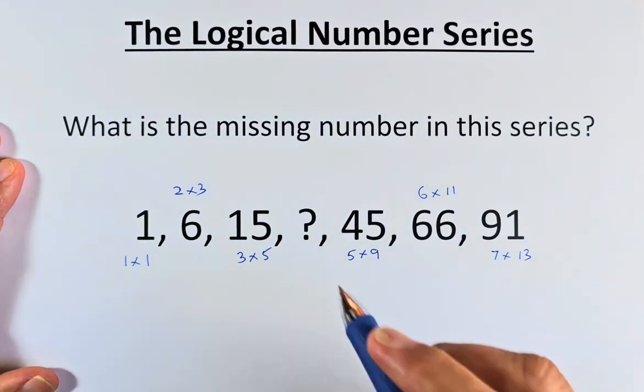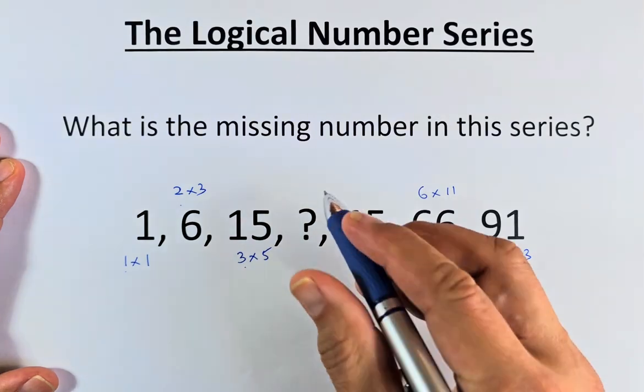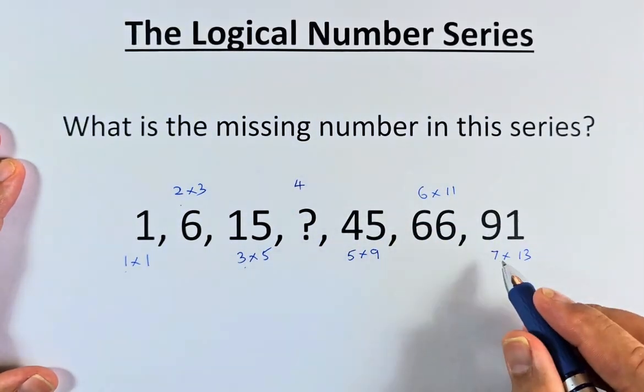So you can see the pattern here. The first number is going to be 1, 2, 3. The next number must be 4, 5, 6, 7.